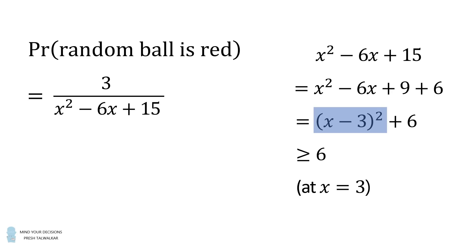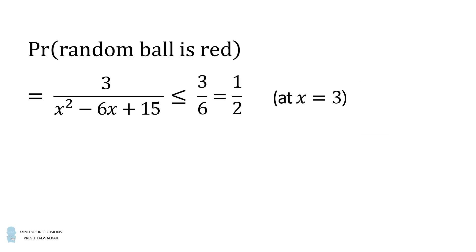So the probability will be less than or equal to 3 divided by 6, and that simplifies to be 1 half. Thus, the maximum probability is equal to 1 half, and that happens when x is equal to 3. And that's the answer.